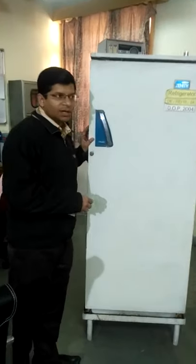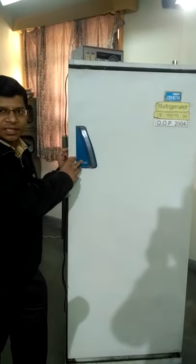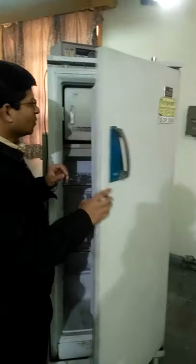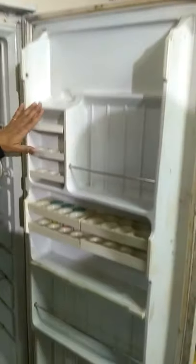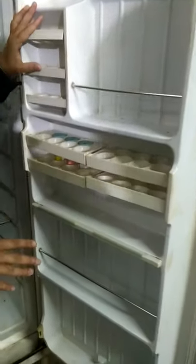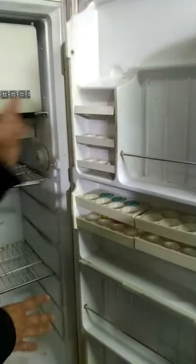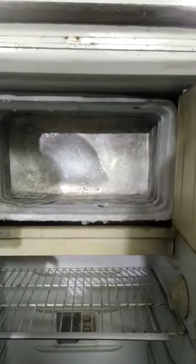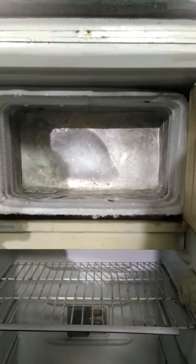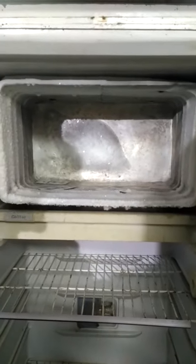This is one model of a domestic refrigerator. You can see this is the main door. After opening the main door, we can see these different compartments. On the door side we have different storage compartments for various food products. On the inner side, this is the main evaporator unit of the refrigerator, in which the cooling effect is produced by the refrigeration cycle.